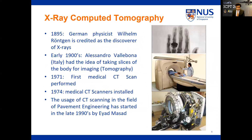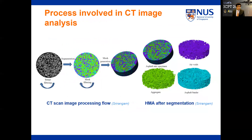X-ray computed tomography has been widely used in medical analysis since the 1970s. In recent years, significant efforts have been made in analyzing various types of infrastructure materials using XRCT and digital image processing. Use of XRCT in pavement engineering started in the late 1990s, enabling accurate measurement of pavement internal structure within voxel resolution. The process involved in CT scan analysis includes image filtering, segmentation, mask filtering, and mesh generation.